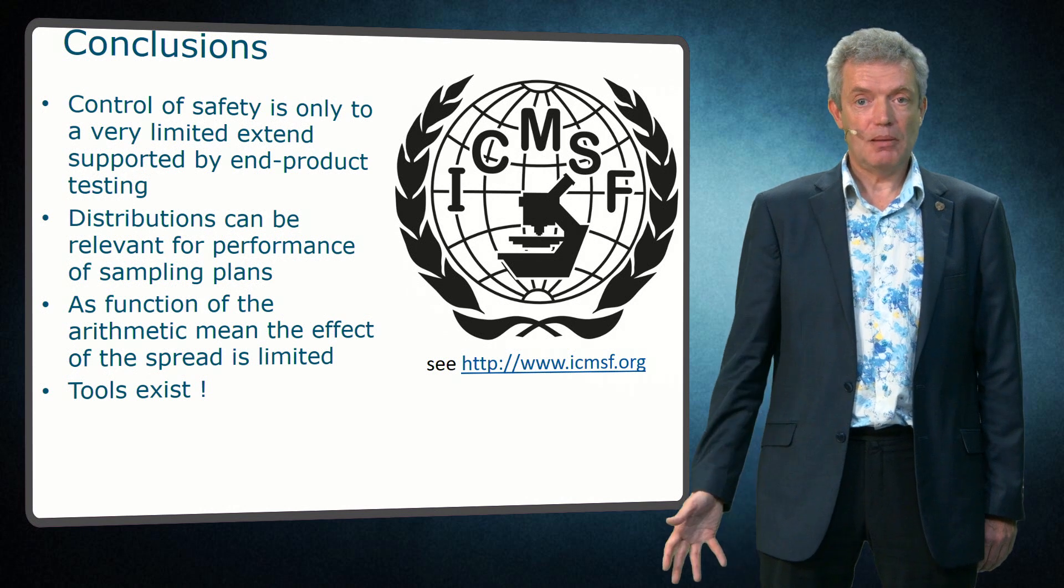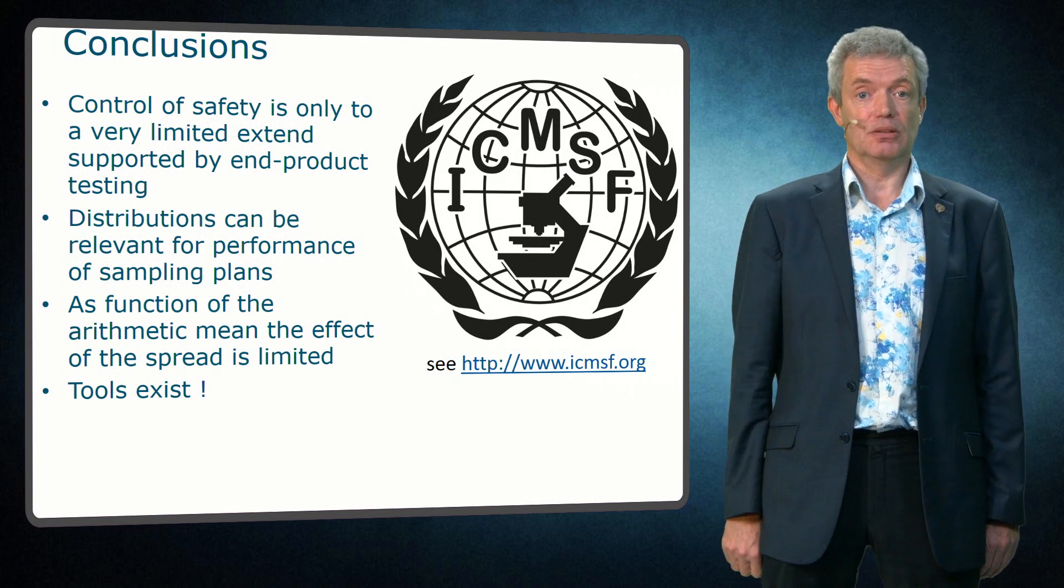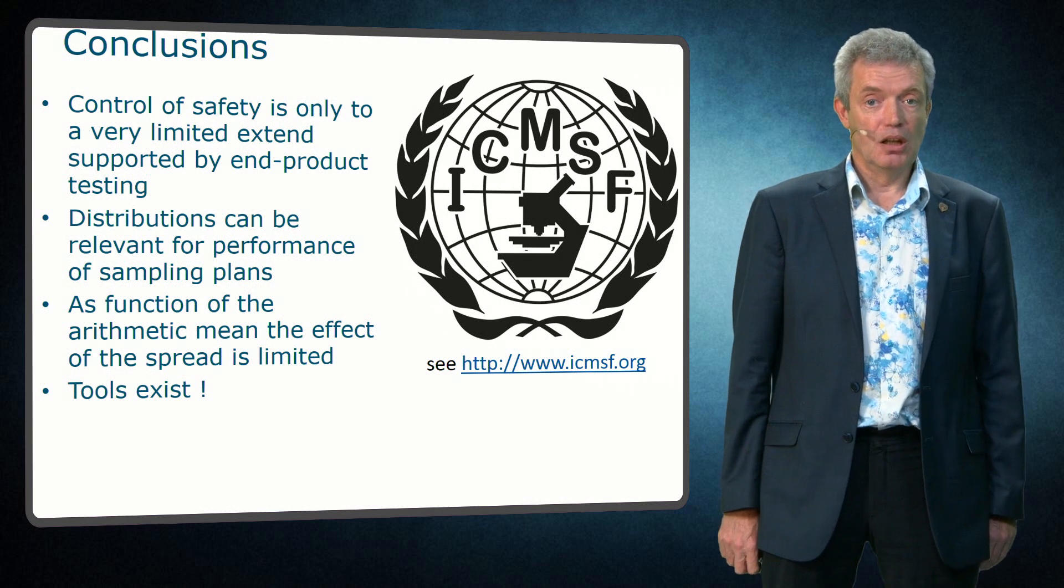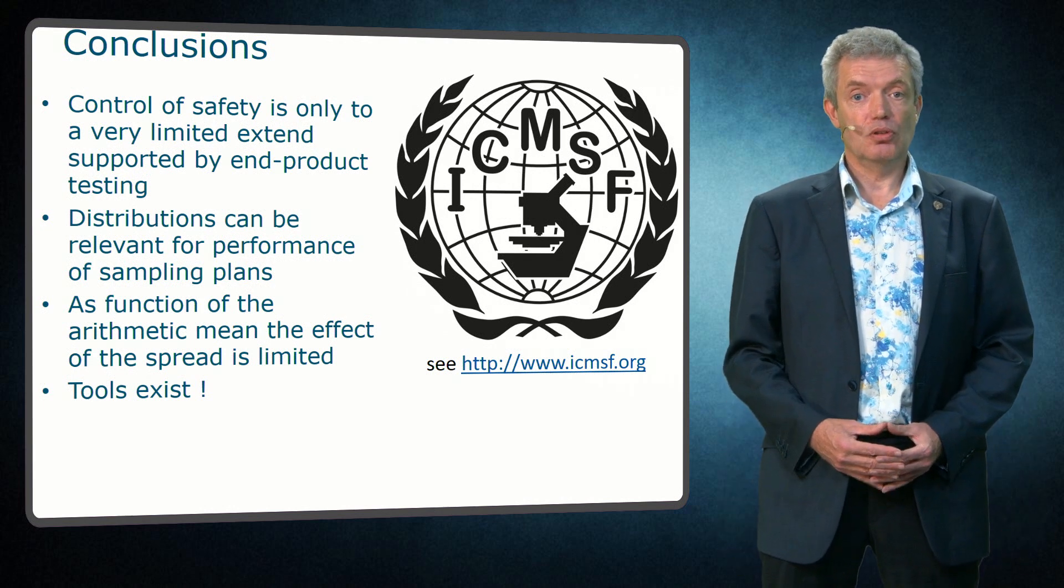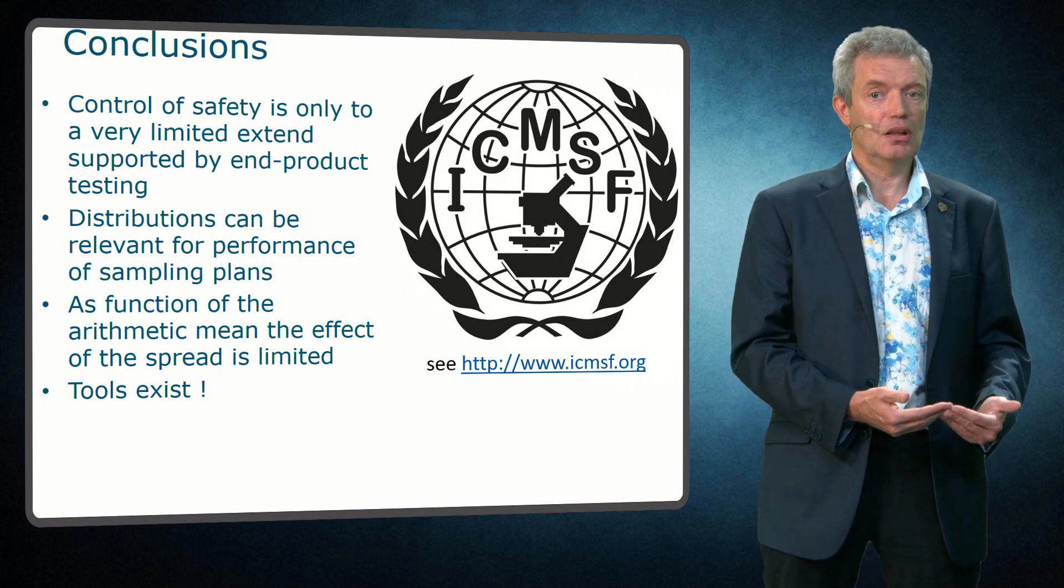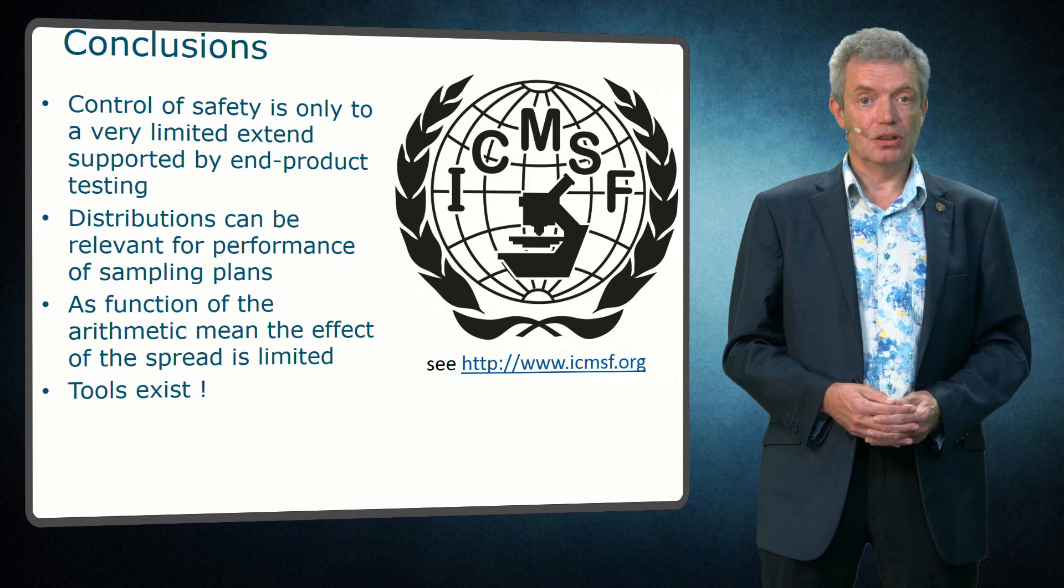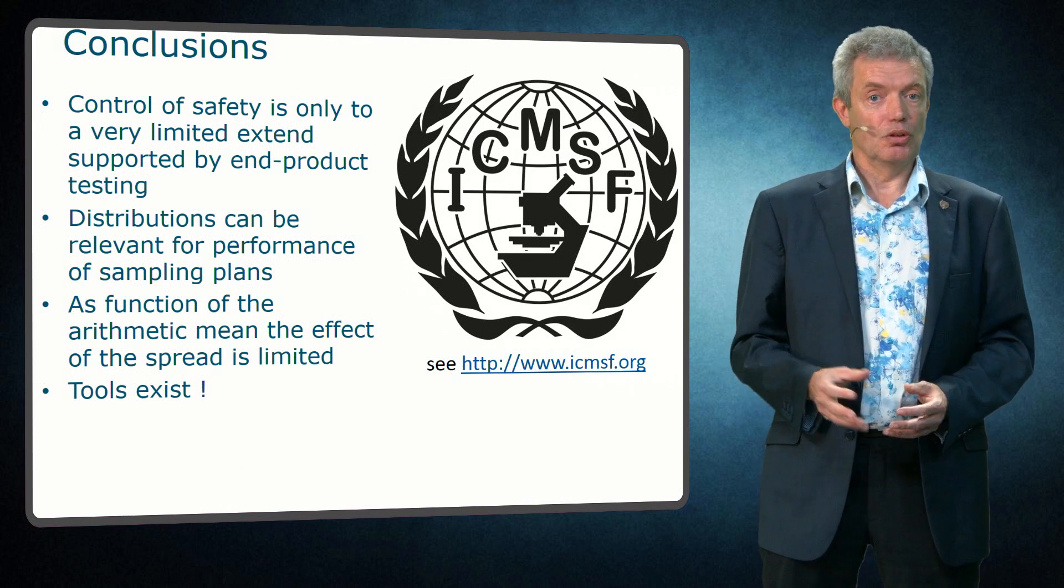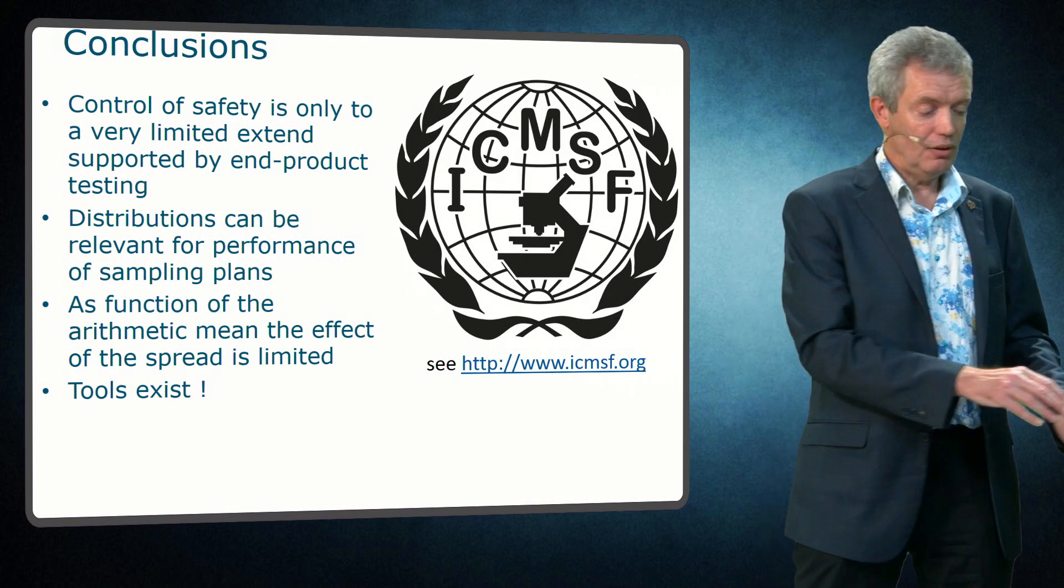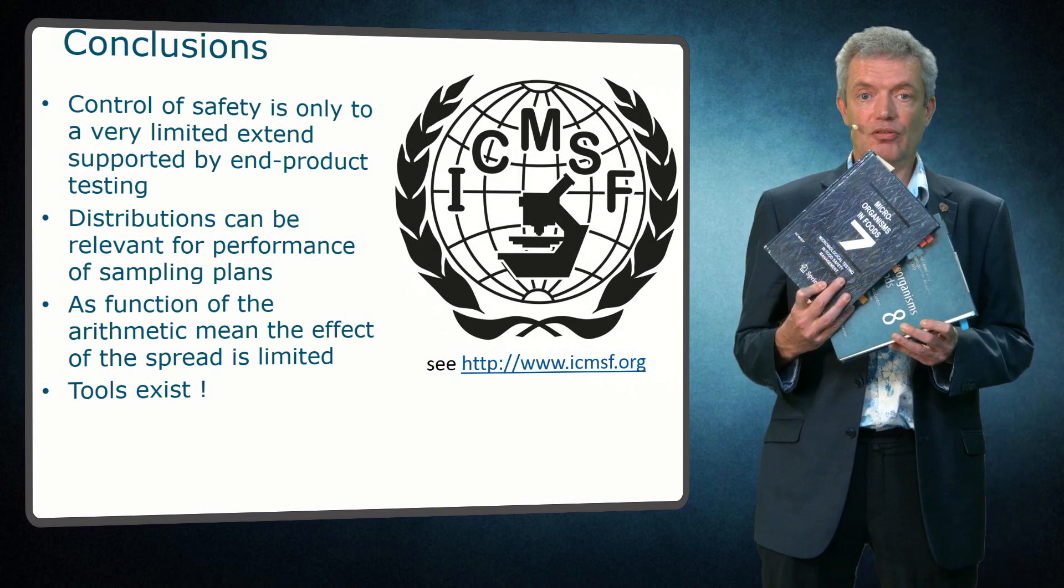So to summarize. Sampling and testing plays only a limited role in control of food safety, but it has a role in verification. The distribution of organisms can have an effect on the performance of sampling plans. However, for lognormally distributed organisms, use of the arithmetic mean of the number of organisms to evaluate the performance of the sampling plan reduces the effect of the spread of the distribution. Tools exist to perform the calculations, for example at the ICMSF website. But understanding of the underlying assumptions is necessary to intelligently use these tools. Further information and in-depth elaboration can also be found in the ICMSF books 7 and 8. Thank you for your attention.